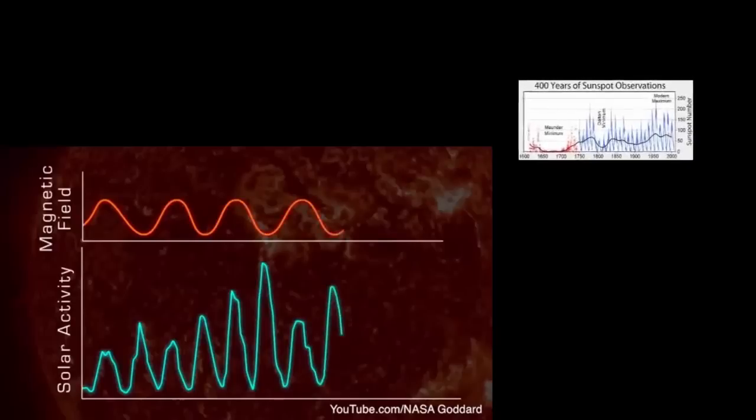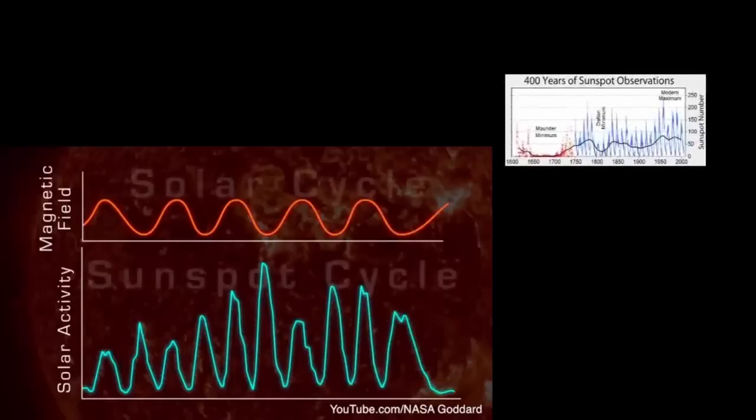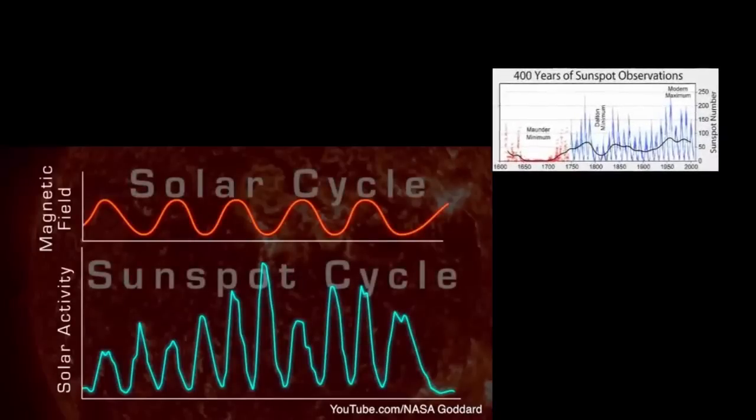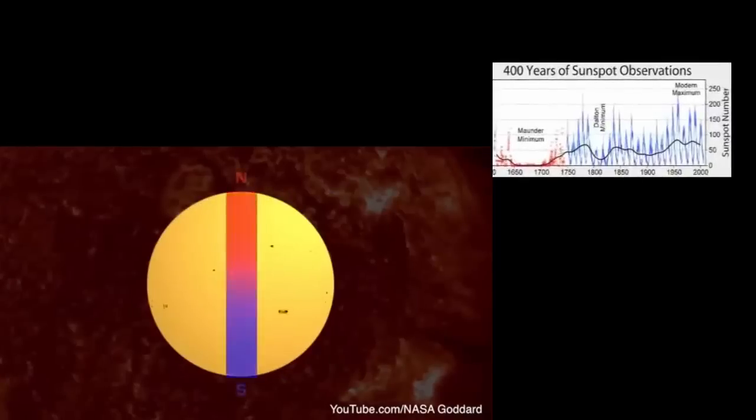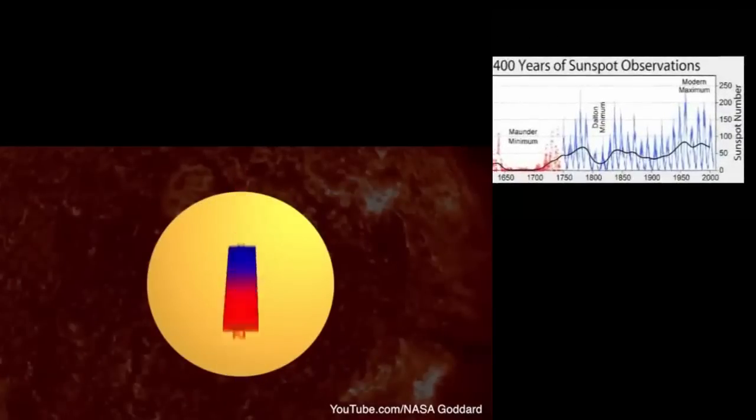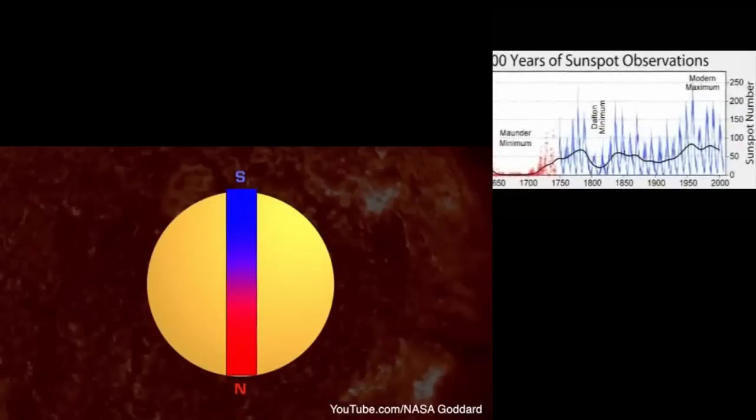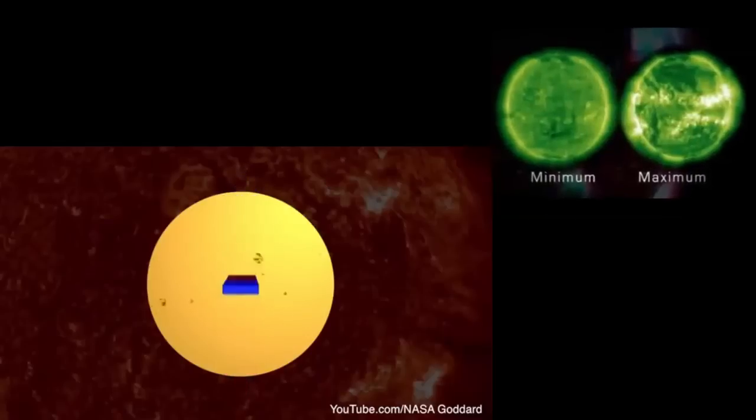Every 11 years, the Sun's poles flip. North becomes south and south becomes north. So every 22 years the poles return to the position where they started the cycle.